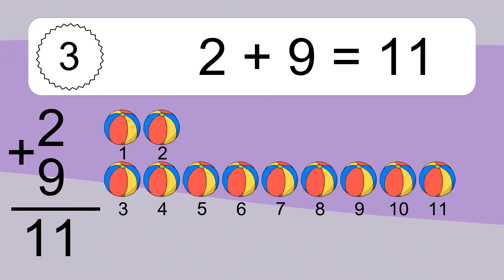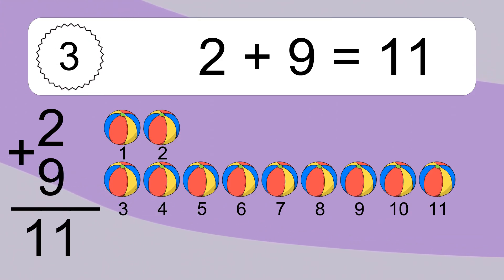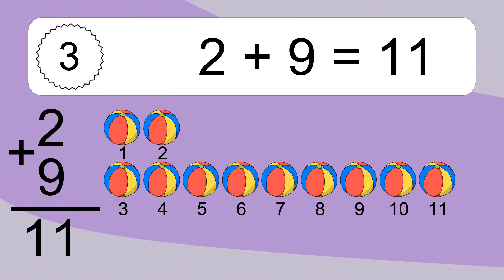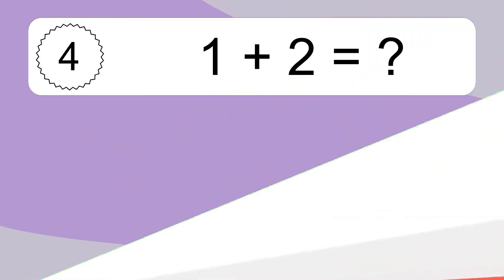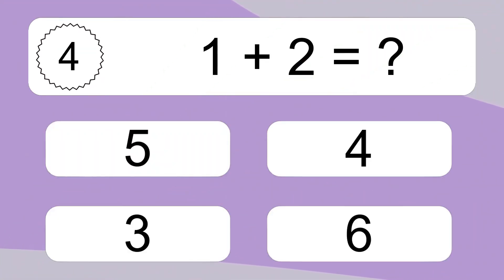2 plus 9 equals what? Let's count it: 1, 2, 3, 4, 5, 6, 7, 8, 9, 10, 11... 15.